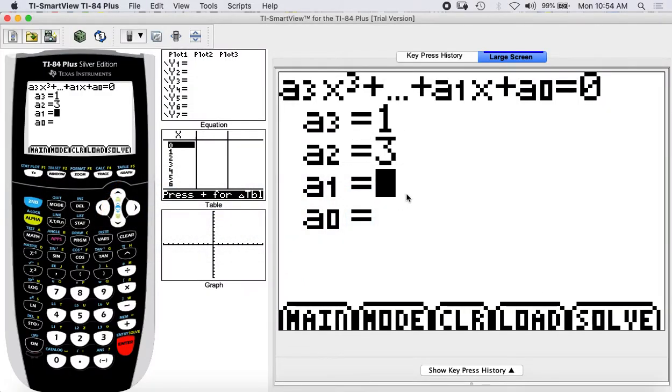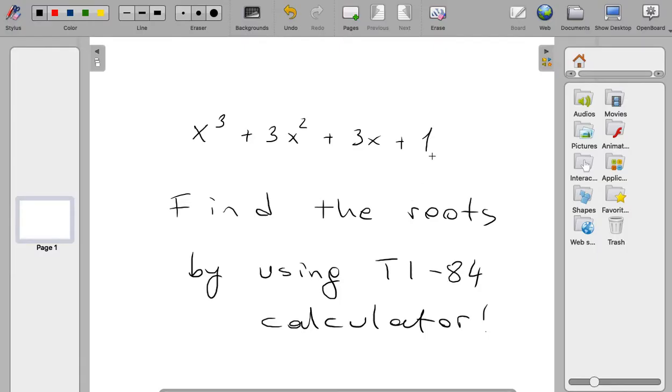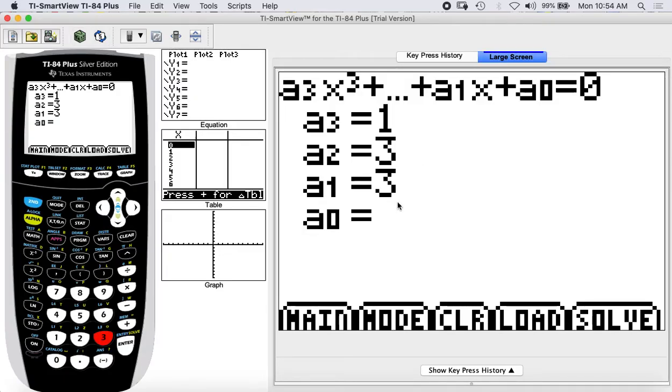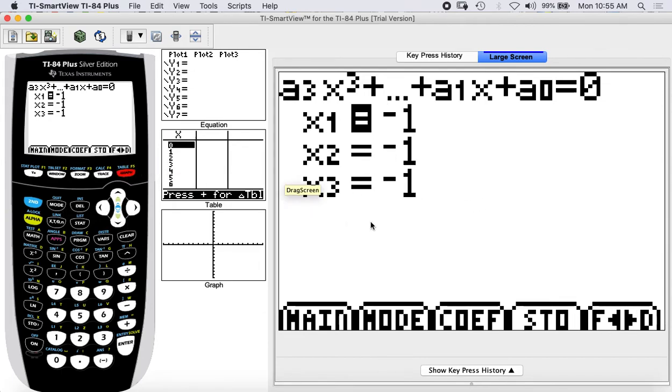So this is 3, and then the last one is 1. So enter 1. And when I say solve, which is here, graph, the calculator is working and finding the roots are negative 1, negative 1, and negative 1. That's it.